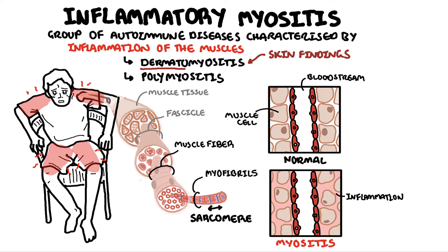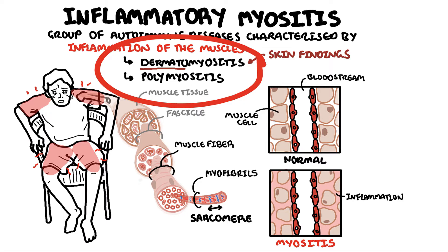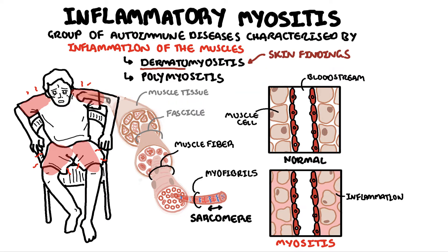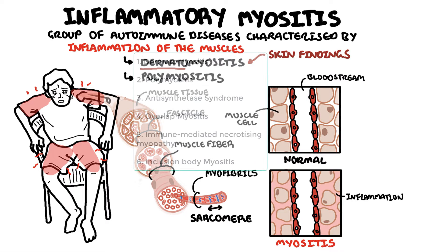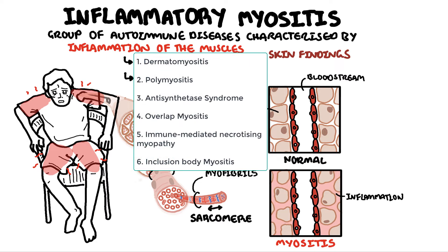Typically, inflammatory myopathies present with proximal muscle weakness, affecting the quadriceps, shoulders, and biceps. Historically, dermatomyositis and polymyositis were the primary types, however six distinct types have now been identified: dermatomyositis, polymyositis, antisynthetase syndrome, overlap myositis, immune-mediated necrotizing myopathy, and inclusion body myositis.